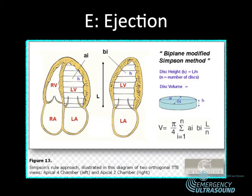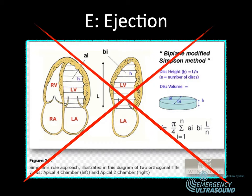The next E is ejection — looking at the overall left ventricular ejection fraction. Ejection fraction estimates are generally done by Simpson's method, specifically the biplane modified Simpson's method, which involves calculating the volume of the left ventricle using calculus-level math. In the emergency department, we don't use Simpson's method. We need something easier and faster at the bedside — no integrals, no differentials, no calculations with n and pi.